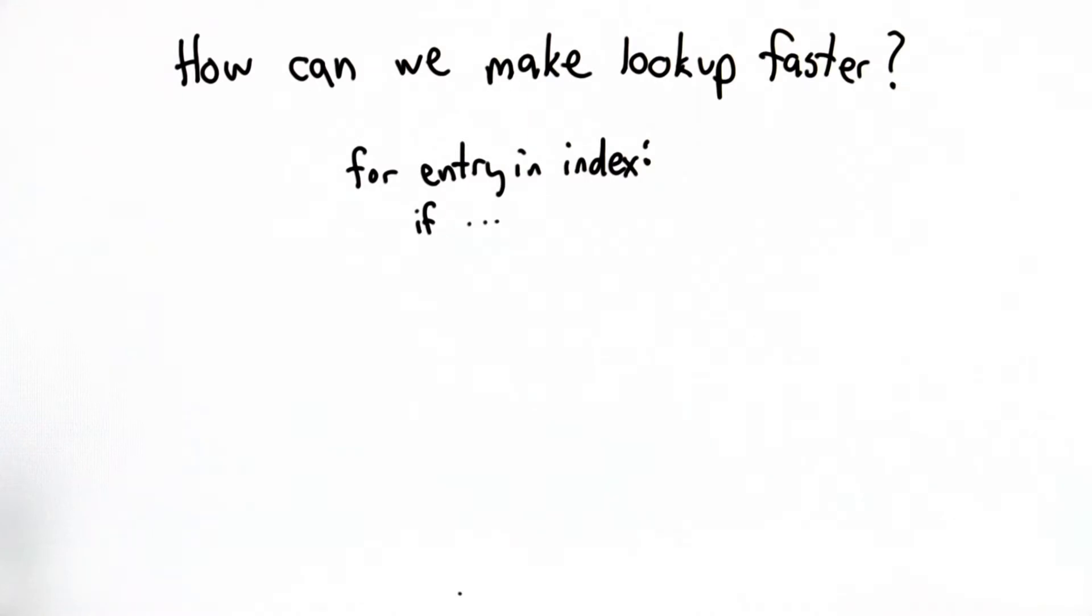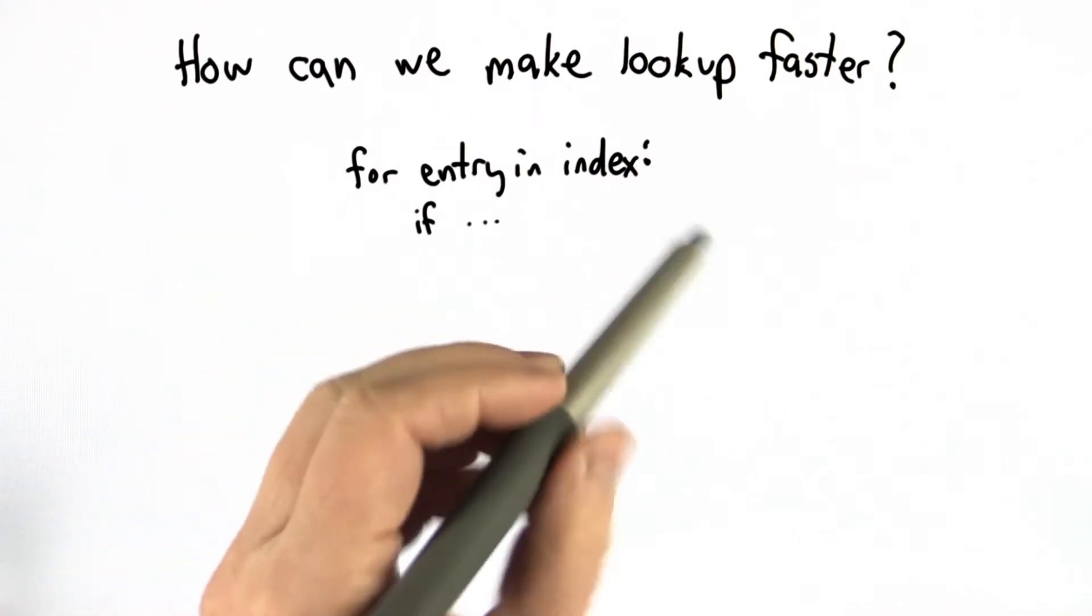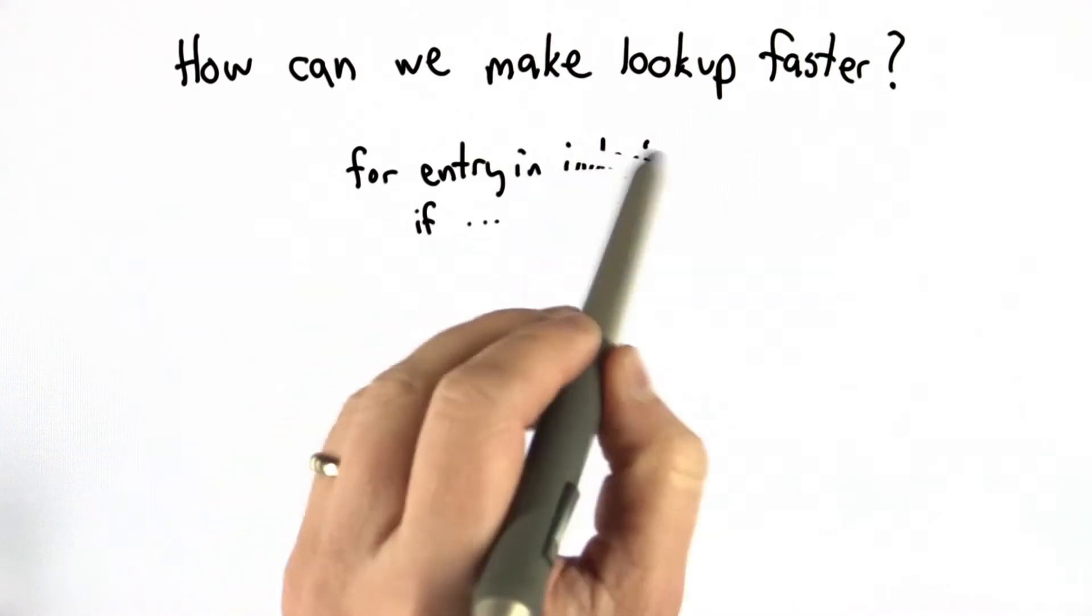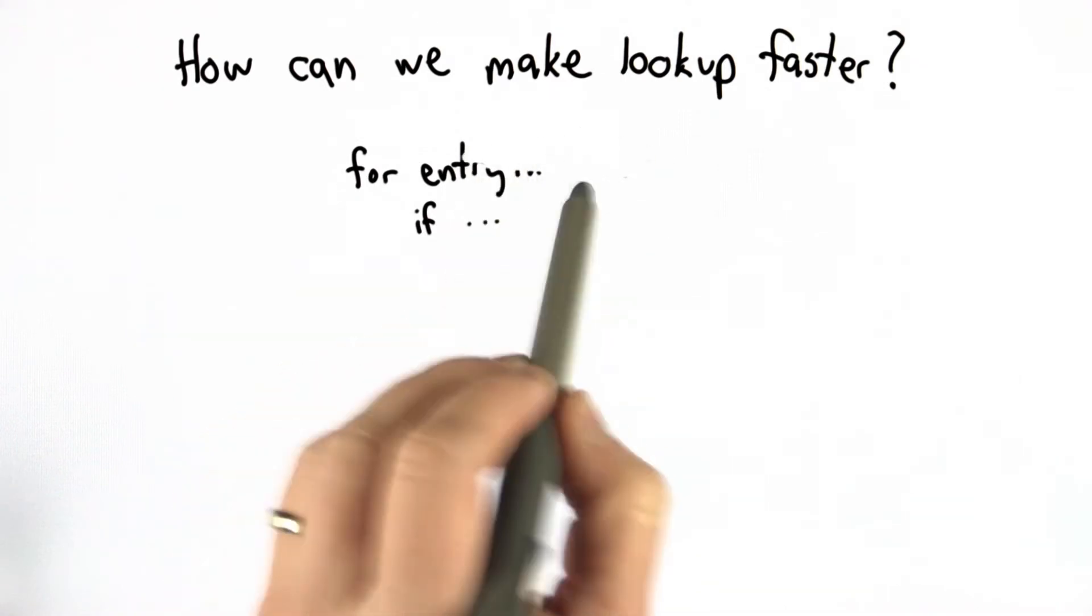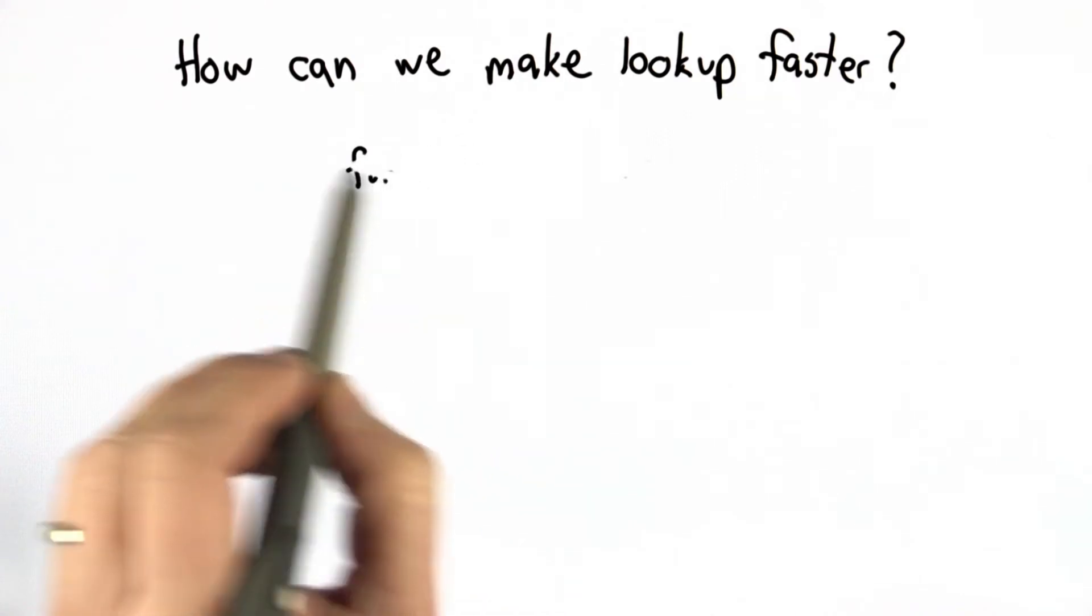They're sorted in alphabetical order, so you know where that entry would belong. You just need to find the right place and see if it's there. So we could do that with our index. Instead of having our index kept in arbitrary order, if we kept our index in a sorted order, then we could find the place where that entry belongs and look for it.